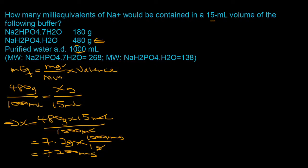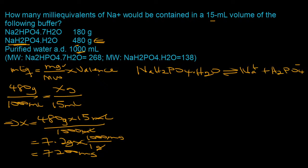Now we determine the valence for NaH₂PO₄·H₂O. In aqueous solution, the water separates out, and the salt dissociates into a sodium cation (Na⁺) and the H₂PO₄⁻ anion. There is one positive charge on sodium and one negative charge on the anion. The valence — the absolute charge on either ion — is therefore 1.